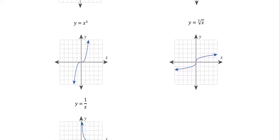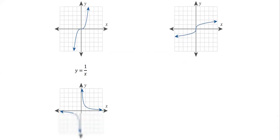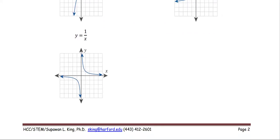Additionally, y = x³ is a cubic graph, and y = ∛x is the cube root of x. These two are similar — one is the power 3, the other is the cube root. And y = 1/x is the reciprocal function graph, where x is not defined as 0. That's why we have a vertical asymptote at x = 0, and the graph appears on both the left and right of the line x = 0.